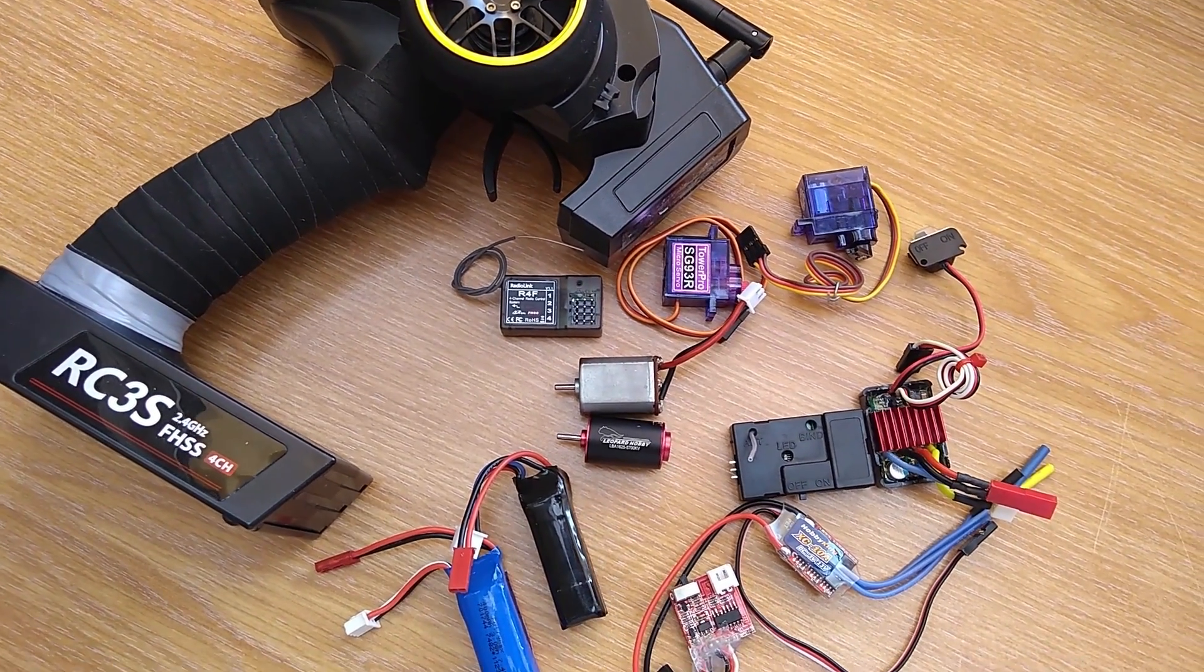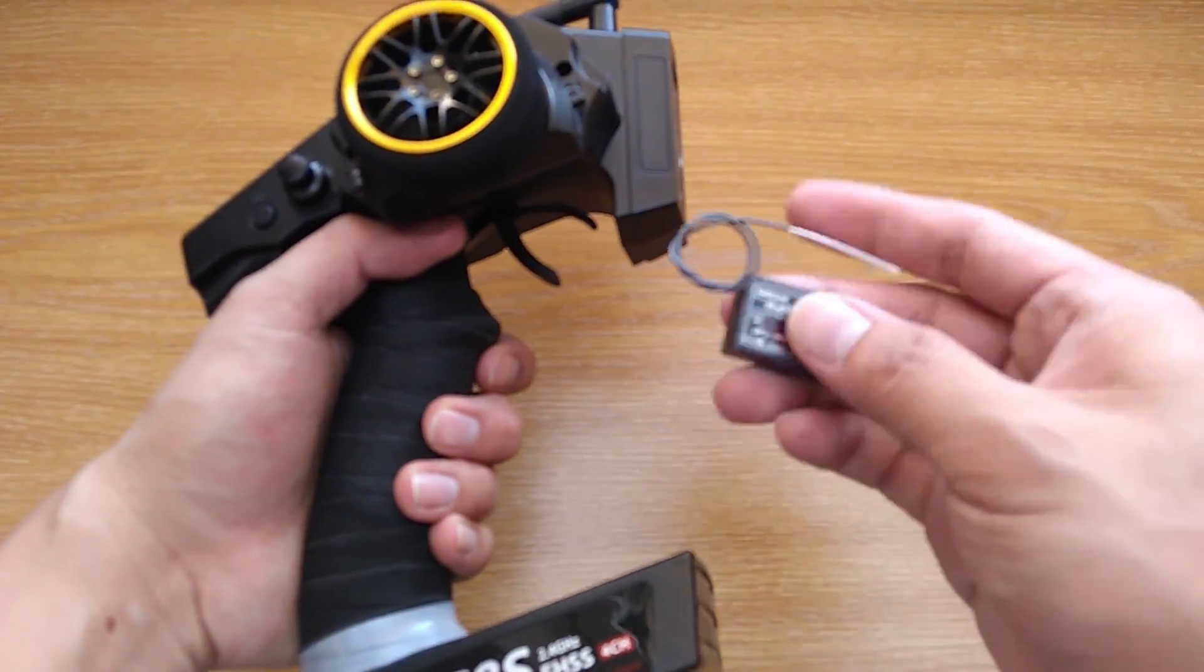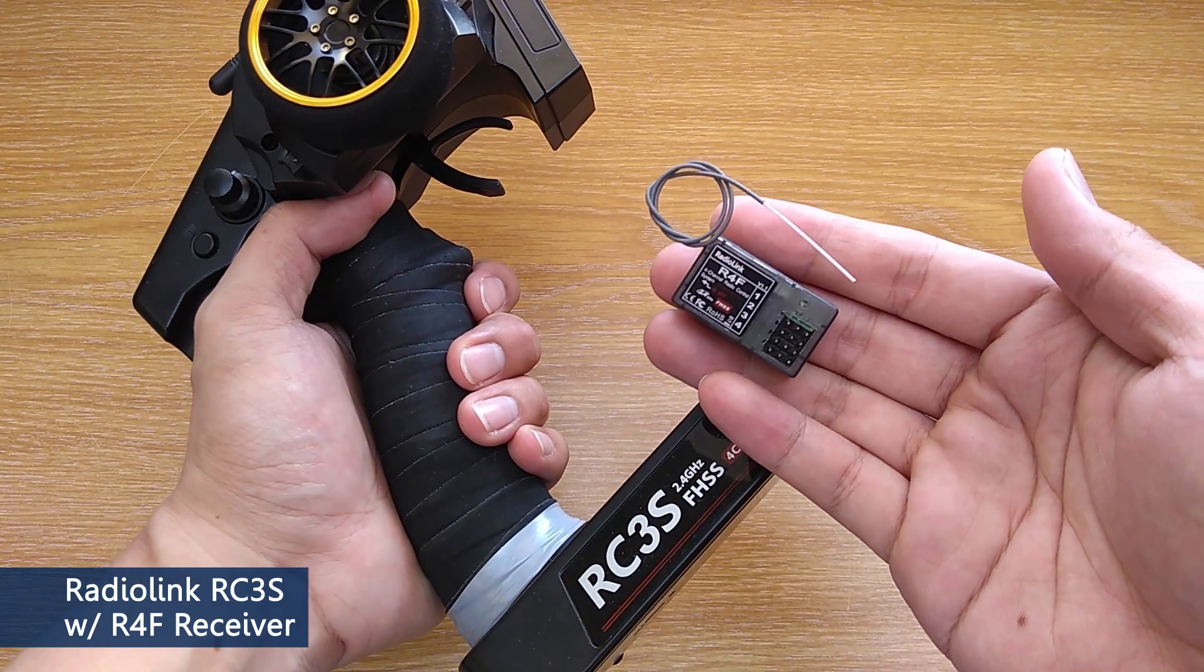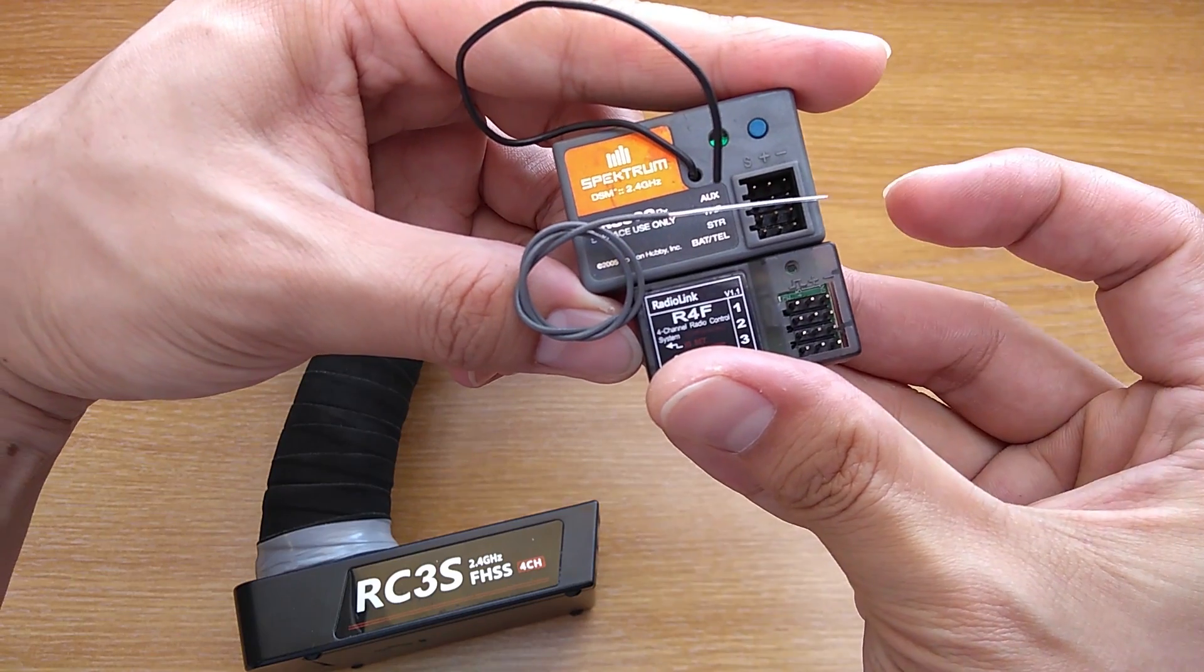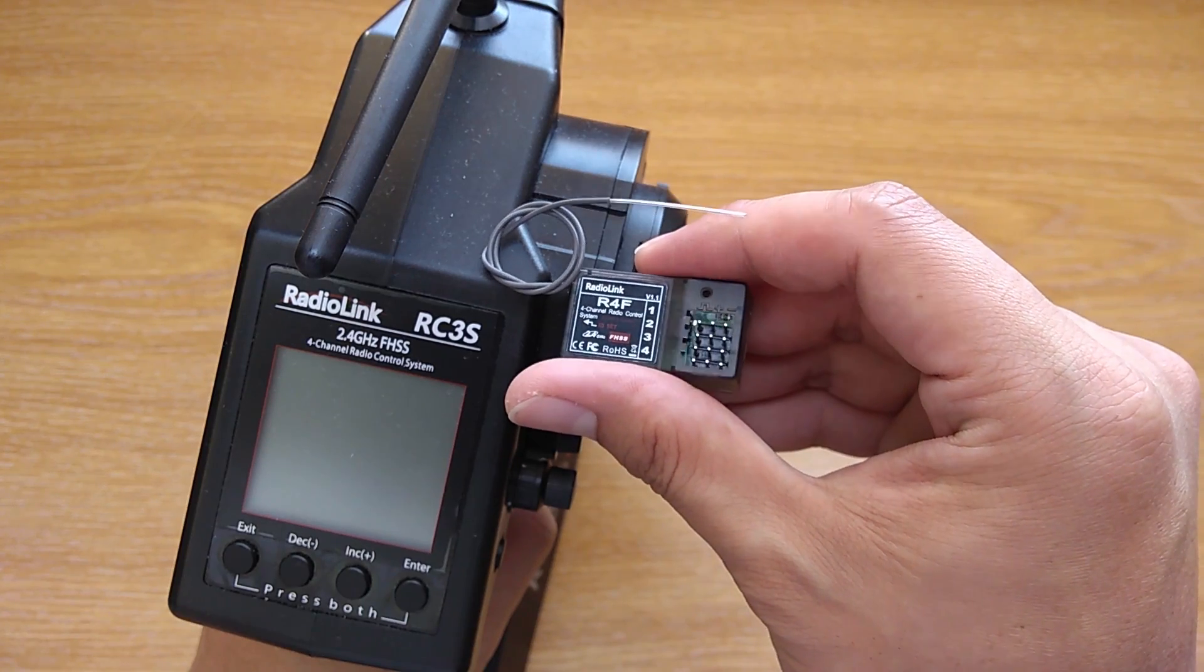With that out of the way let's get started to upgrade the electronics in IWO4M. First, you need a transmitter and receiver, preferably the one that has a small receiver. Don't choose one with a massive receiver like this because it won't fit. So once again I choose radio link.